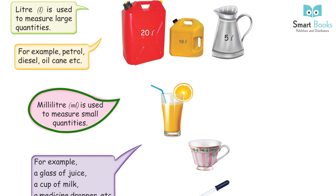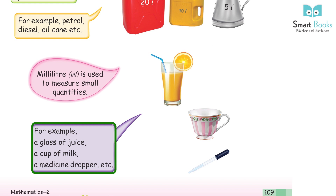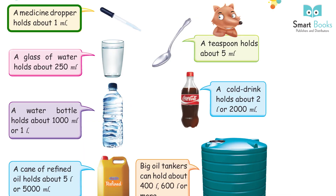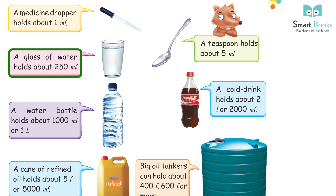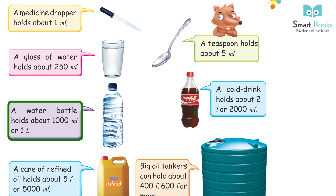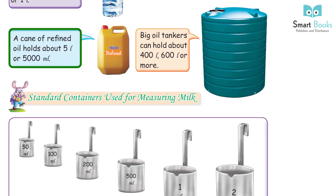Milliliter is used to measure small quantities, for example a glass of juice, a cup of milk, a medicine dropper, etc. A medicine dropper holds about 1 milliliter. A teaspoon holds about 5 milliliter. A glass of water holds about 250 milliliter. A cold drink holds about 2 liter or 2000 milliliter. A water bottle holds about 1000 milliliter or 1 liter.